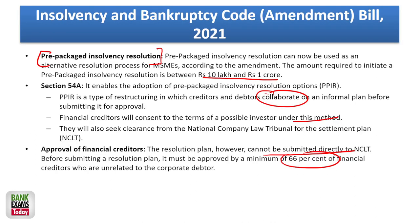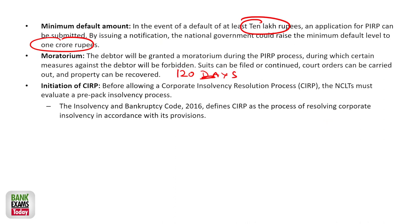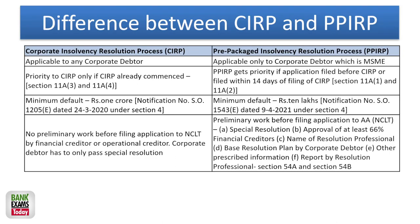The NCLT gives preference to pre-packaged insolvency resolution processes before CIRP — priority is given, they are ahead of the line. The major difference: CIRP is applicable to any corporate debtors where the minimum default amount is one crore. PPIRP is applicable to MSMEs where minimum default is 10 lakhs and maximum is one crore. PPIRP gets priority in resolution if the application is filed before CIRP. No preliminary work is required in case of CIRP.